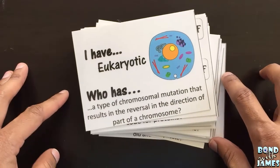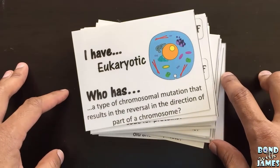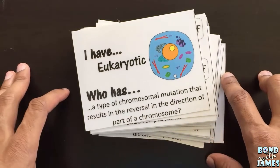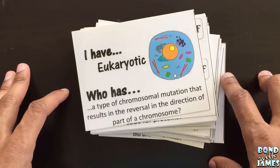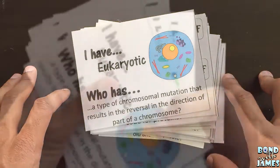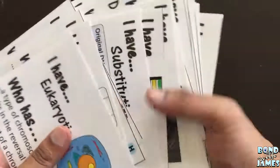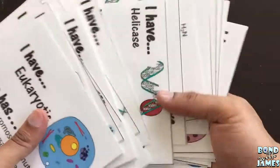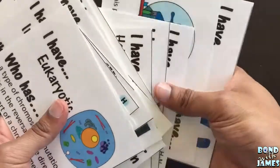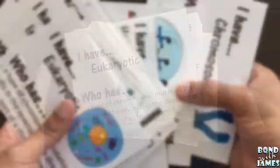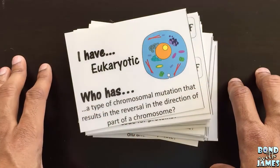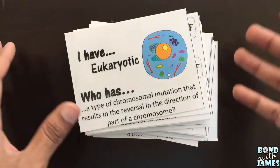This is James of Bond with James, and this is the DNA and RNA I Have Who Has Card Sort Activity. There are 24 cards in this set, as of the making of this video, and this is a chain slash looping game.